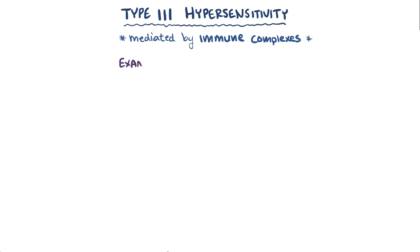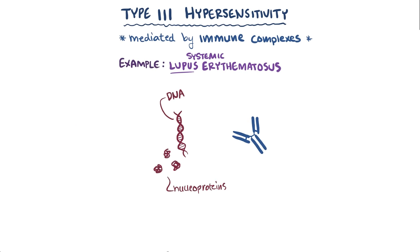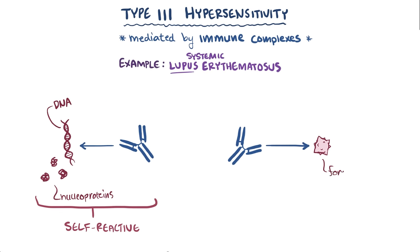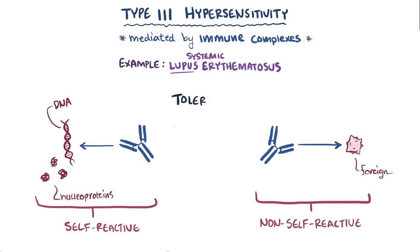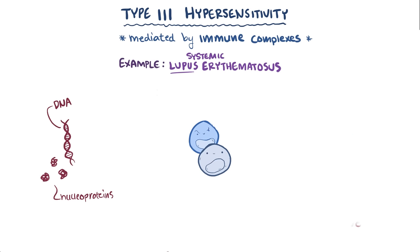A good example of a type III hypersensitivity is the autoimmune disease systemic lupus erythematosus, also just called lupus. In lupus, the IgG antibodies are typically specific for DNA and nucleoproteins, both of which are part of our own cells, making them self-reactive. Normally, your body should only react to things that are foreign or not-self, and this is maintained by a process known as tolerance, where only non-self-reactive B and T cells are allowed to mature, whereas self-reactive B and T cells aren't. This process though isn't perfect, and sometimes some self-reactive cells can escape and mount an immune response against autoantigens or self-antigens.